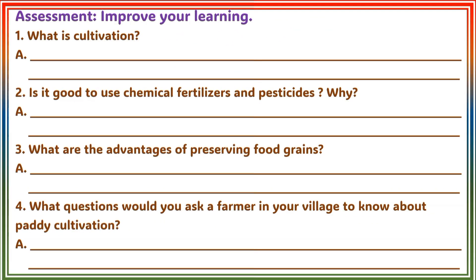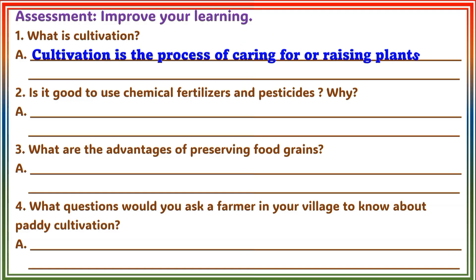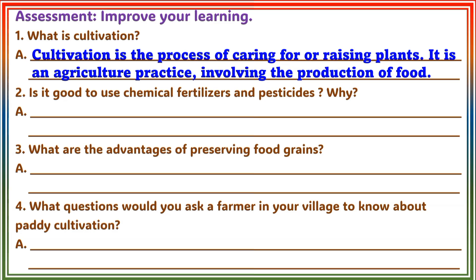Worksheet 11 Assessment: Improve your learning. Question 1: What is cultivation? Answer: Cultivation is a process of caring for or raising plants. It is an agriculture practice involving the production of food.